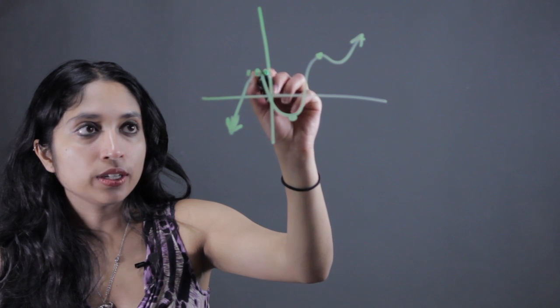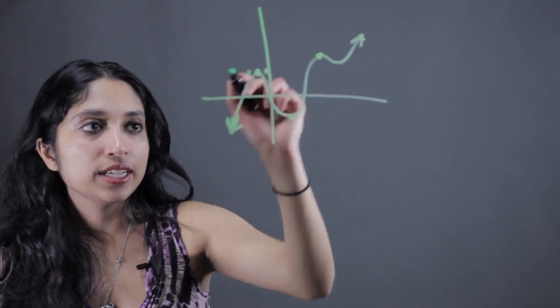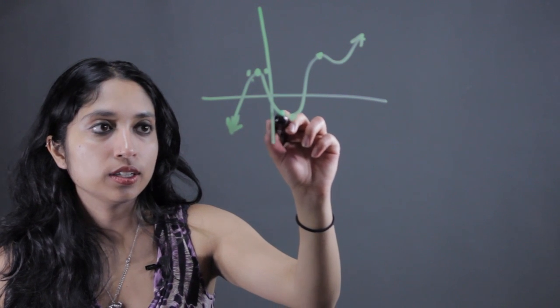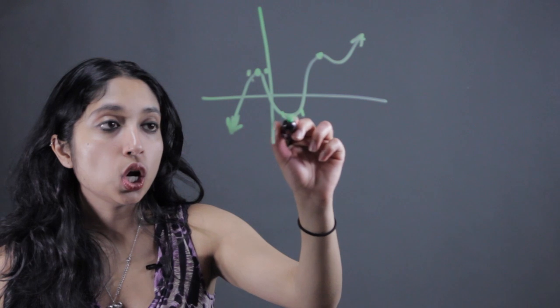So within this interval right here, this is the highest function. And within this interval right here, this is the lowest value.